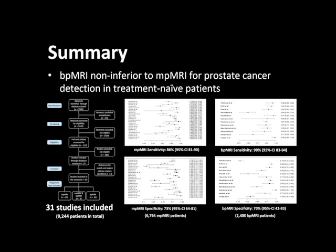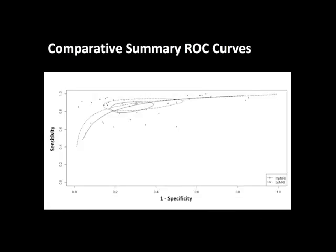We performed this systematic review and meta-analysis and identified 31 studies including just over 9,000 patients. We found that bi-parametric MRI seemed to be non-inferior to multi-parametric MRI in detecting prostate cancer in treatment-naive patients. Sensitivities for the two ranged between 86 to 90 percent, whereas specificities ranged from 70 to 73 percent, and both had overlapping confidence intervals for diagnostic accuracy, as well as overlapping comparative summary ROC curves for the two MRI protocols.